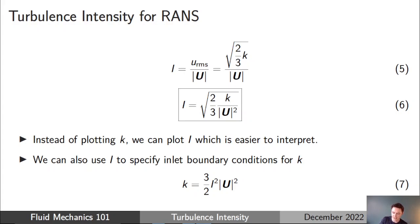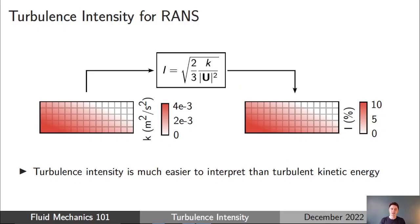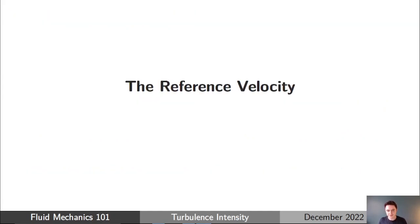Instead of plotting contours of turbulent kinetic energy, we can plot turbulence intensity — way easier to interpret. In the example contour plot, a turbulent kinetic energy of 3×10⁻³ is hard to judge, but once we apply the formula and convert it to turbulence intensity, we can clearly see where the turbulence intensity is low — around 1% — and where it's high — around 10%. And of course in RANS CFD, we know roughly how much energy is in the turbulence but nothing about its structure or distribution.